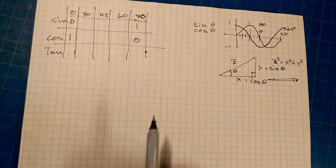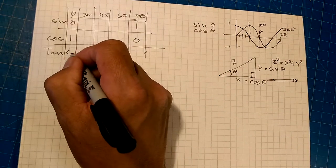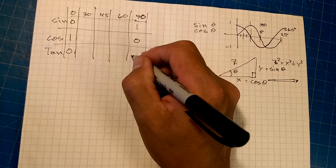X is equal to cos theta. Okay. And tangent is opposite over adjacent. So, tangent of 0 is 0, and tangent of 90 is undefined.